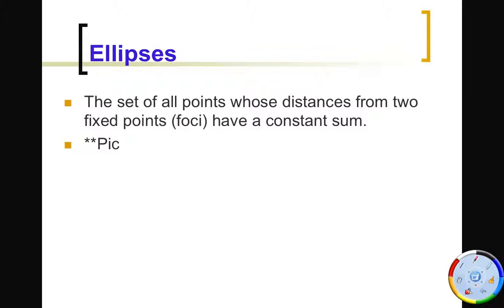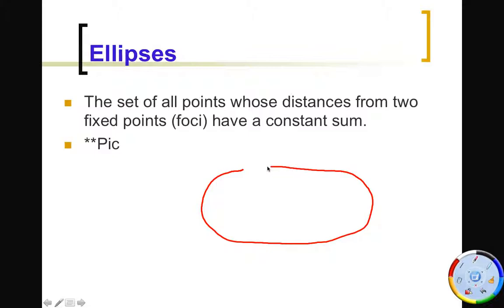Our definition — you might already know a little bit about what an ellipse is. It's basically this shape. Some of you would say that's an oval, but it's not really — it's an ellipse. An ellipse by definition is a set of all points whose distances from two fixed points called the foci have a constant sum.